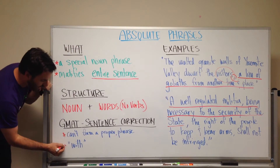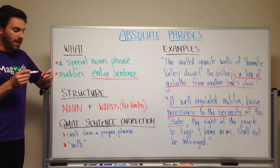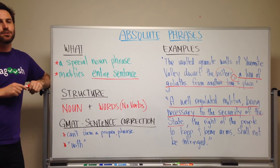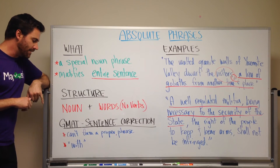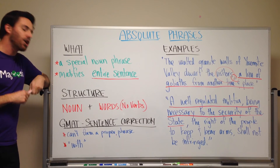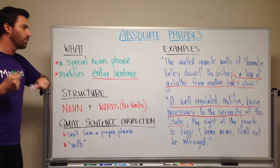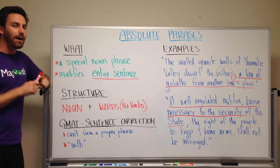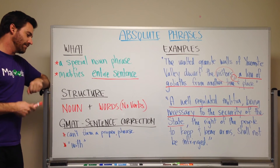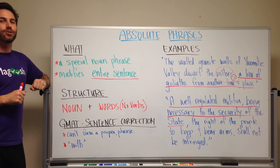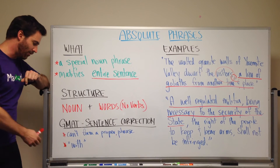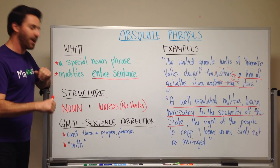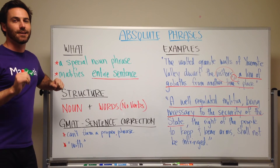And then finally, another quick tip: look out for absolute phrases that begin with 'with.' This is a colloquial expression — we use 'with' at the beginning of absolute phrases in speech, but in formal writing and on the GMAT, they don't like it. So make sure to avoid answer choices that have an absolute phrase beginning with 'with.'